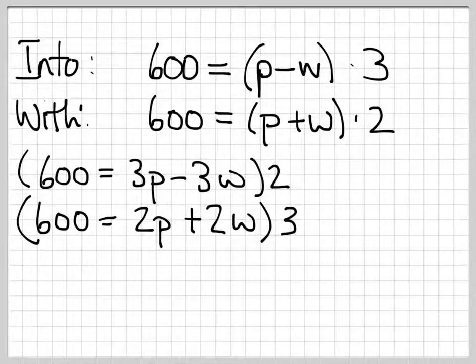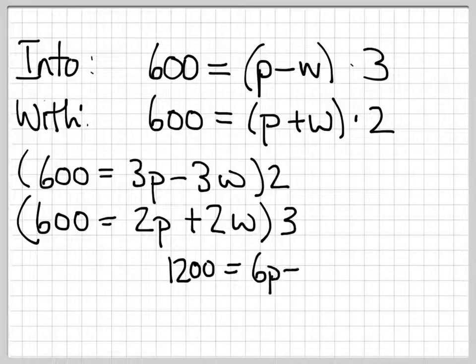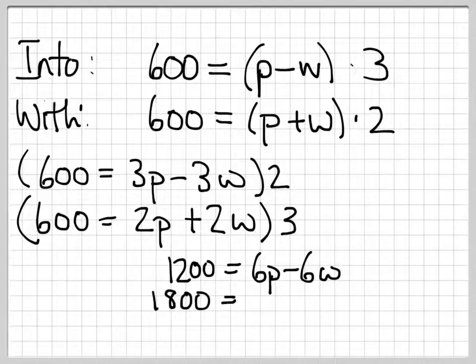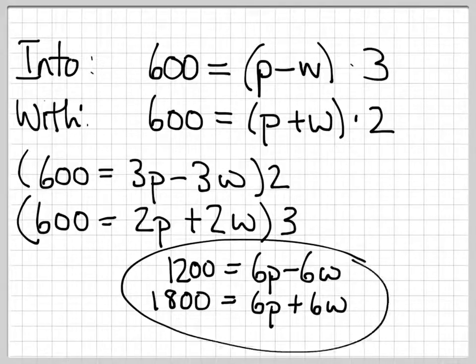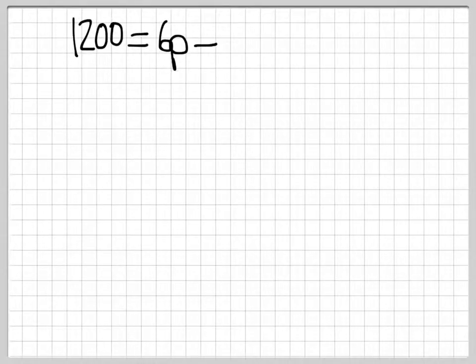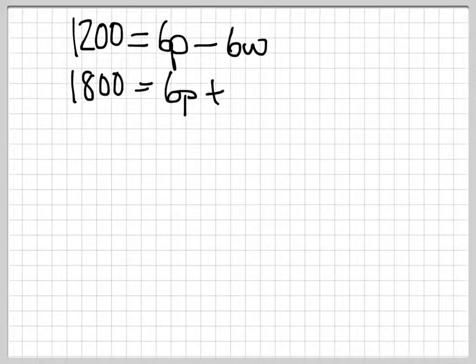Our two new equations are 1200 equals 6p minus 6w and 1800 equals 6p plus 6w. And we can see that these two equations will eliminate nicely.